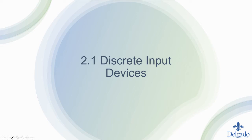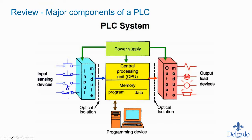We're going to start this first section on discrete input devices. As a quick review, the basic components of a PLC are pretty much universal — doesn't matter which brand or size PLC, whether it's a mini, small, medium, or large. They all have a power supply, a CPU, and some sort of internal memory. The CPU could be embedded, like a microcontroller, or a modular CPU like a large controller such as the CompactLogix or ControlLogix. Power supplies are typically field-selectable: either 24V DC or 120V AC.